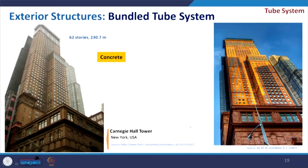In recent times, another example is the Burj Khalifa — go and search about this. Coming to the concrete bundle tube, the Carnegie Hall Tower is an example made of concrete where a similar arrangement of small and large blocks are clubbed together to create the form.